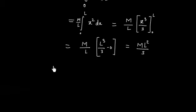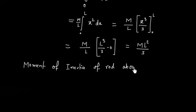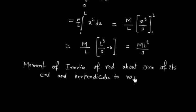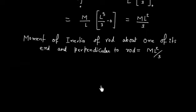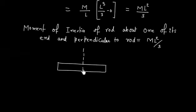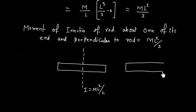So the moment of inertia is ML²/3. To summarize: if a rod rotates about an axis through its center of mass and perpendicular to the rod, the moment of inertia is ML²/12. If the rod rotates about an axis through one end and perpendicular to the rod, the moment of inertia is ML²/3.